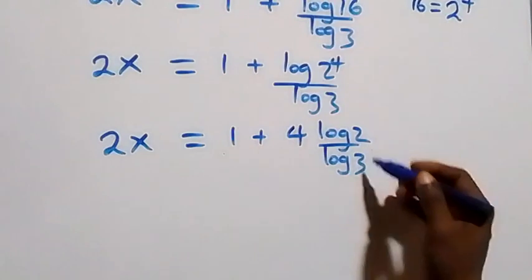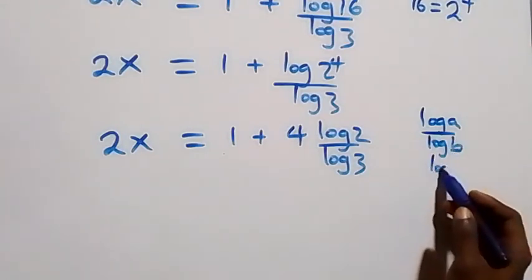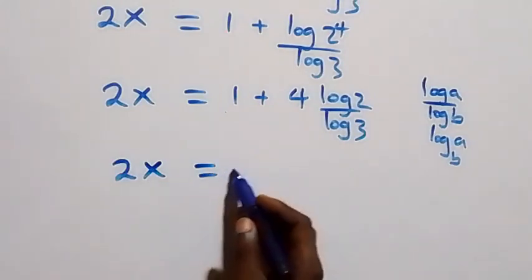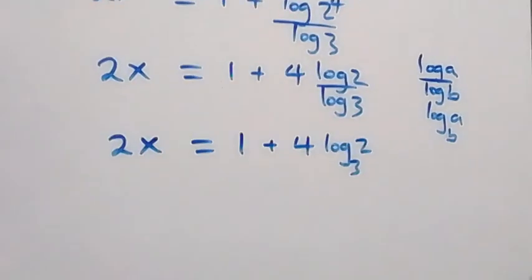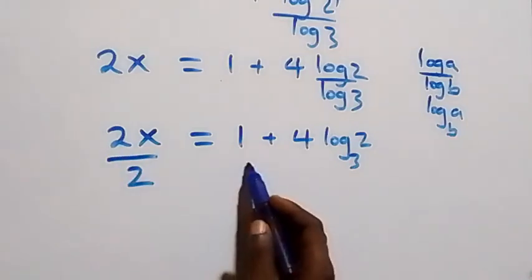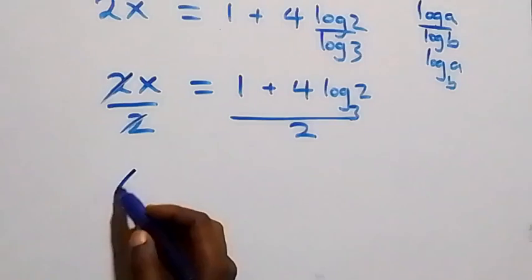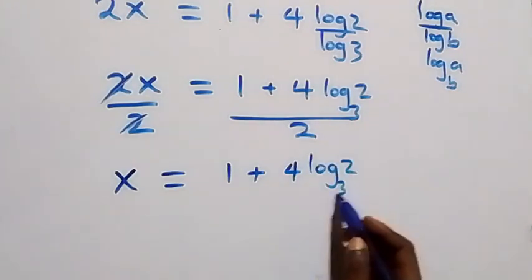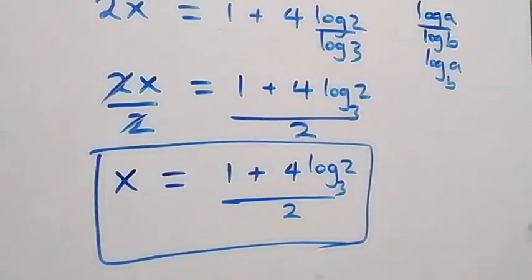On this side we apply change of base: when we have log a over log b, this can be written as log a to base b. So here we have two x equals to one plus four log two to base three. Then we divide both sides by two — the two cancels — and what we have left becomes x equals to one plus four log two base three, all over two.